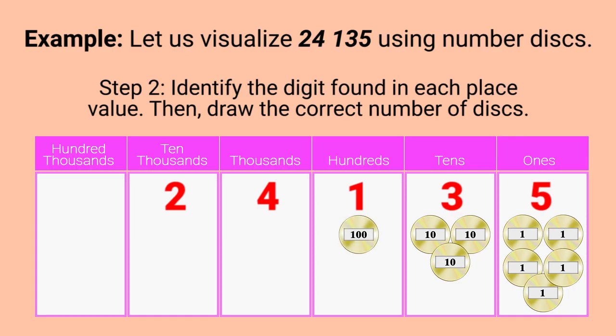And, what digit is found in the 1000s place? 4. You're right! So, we will draw 4 1000s here: 1, 2, 3, 4.